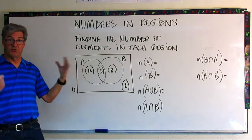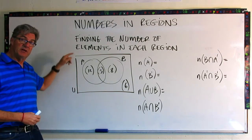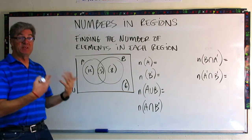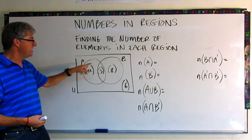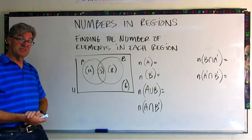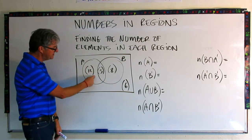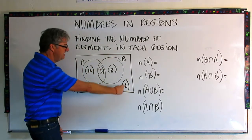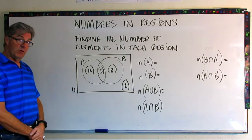Now let's do a couple of examples. What we're focused on now is finding the number of elements in each region. This is a little different than before when we were trying to determine what the elements were — now we're just figuring out how many elements there are in each region. We haven't defined a universal set or set A and B by any parameters. All we're looking at is the number of elements. The number in parentheses means how many elements are in that zone.